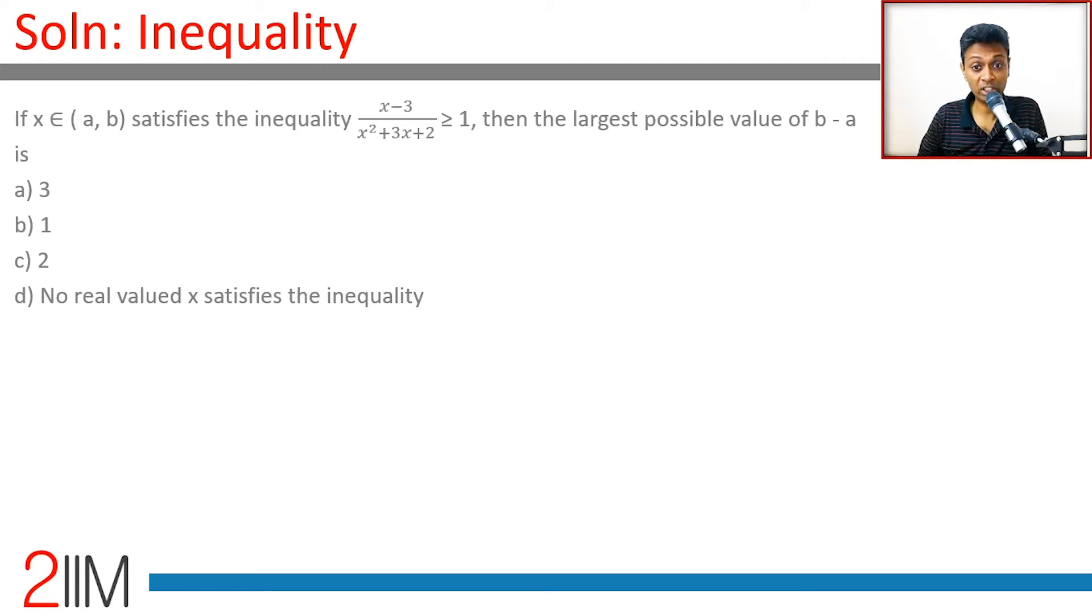x belongs to (a, b) and satisfies the inequality. The largest possible value of b minus a will be... I'm going to write this as (x - 3)/(x² + 3x + 2) - 1 ≥ 0.